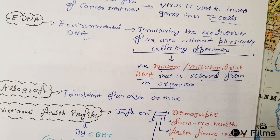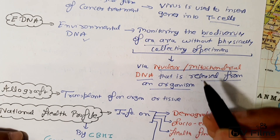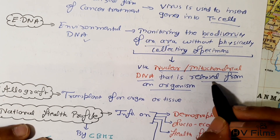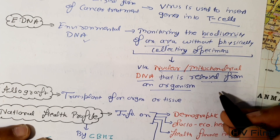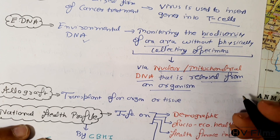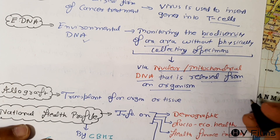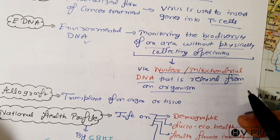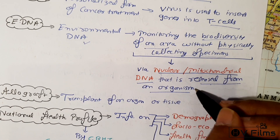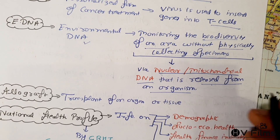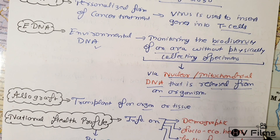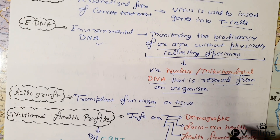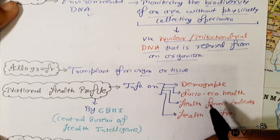eDNA can be released in various forms such as mucus, gametes, shed skin, hair, and carcasses. Allograft refers to the transplantation of organs or tissues from one individual to another.